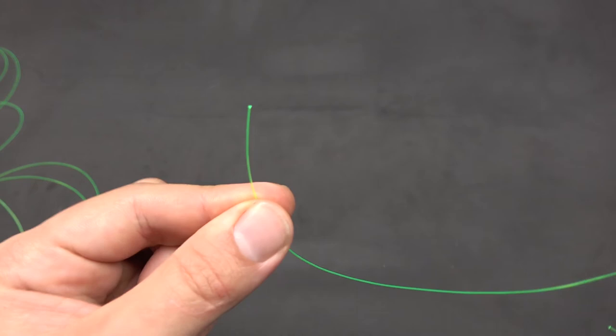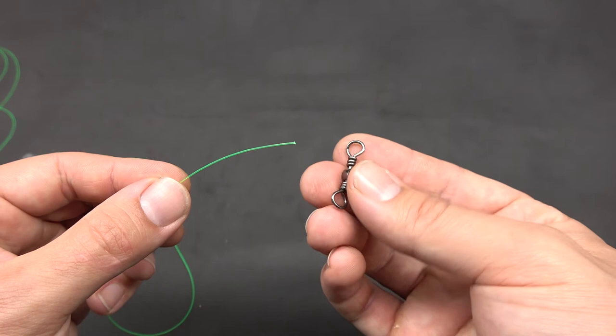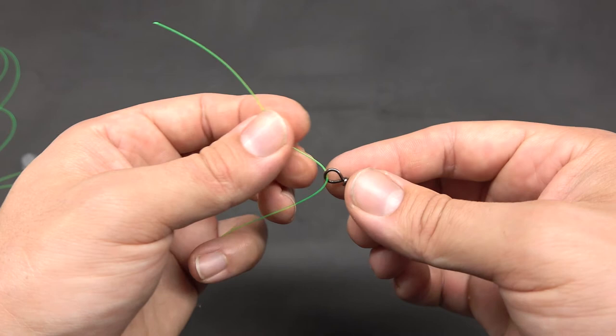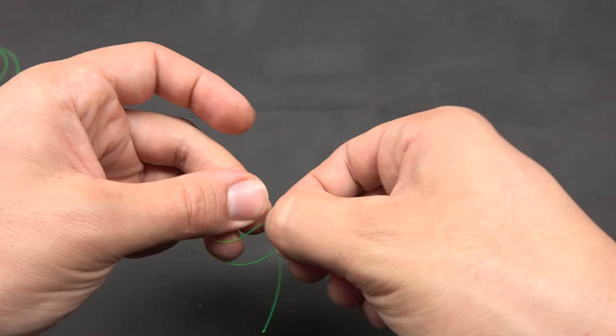Then we attach this free end to one eye on our three-way swivel. I'll demonstrate a quick uni knot to attach it to the swivel. Pass the line through, fold it over, create a loop, and then pass your tag end through this loop.